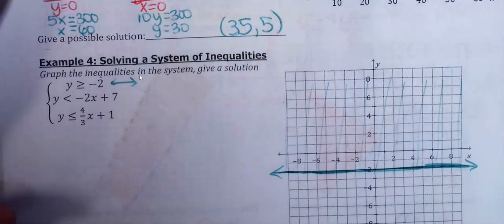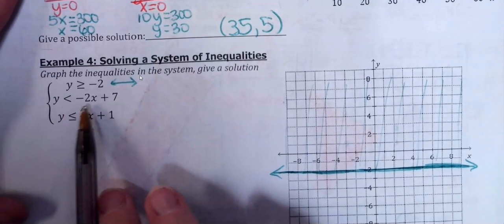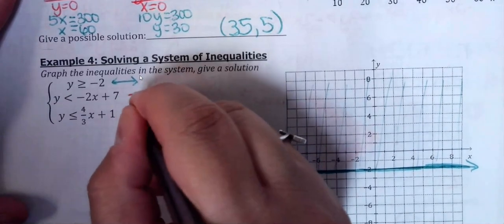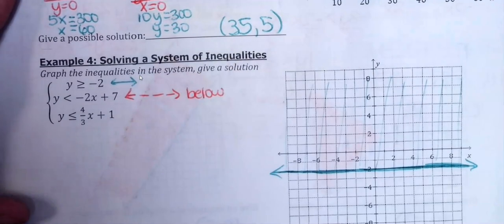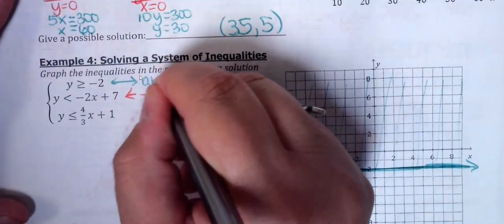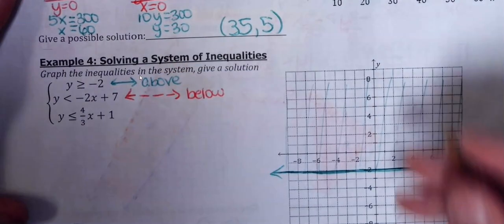Alright, the second inequality, I've got y is less than negative 2x plus 7. So this is going to be a dashed line. We're going to shade below. I shaded above this other one, just to note that. So we're going to go 7,